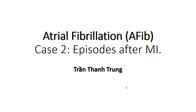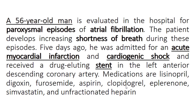Chúng ta sẽ tóm tắt ca lâm sàng này. Đây là ca rung nhĩ sau nhồi máu cơ tim. Bệnh nhân 56 tuổi được đánh giá trong bệnh viện với tình trạng cơn rung nhĩ kịch phát, và ông ấy có tình trạng khó thở tăng dần. Năm ngày trước, ông ấy đã được nhận vào với tình trạng nhồi máu cơ tim cấp và sốc tim, và đã được đặt một cái stent có phủ thuốc ở nhánh động mạch gian thất trước.